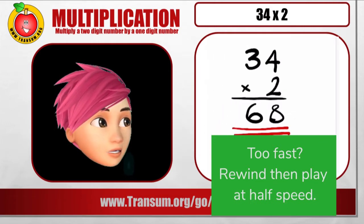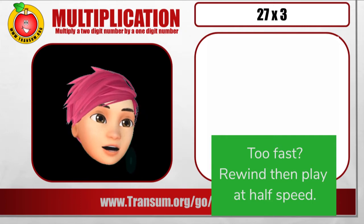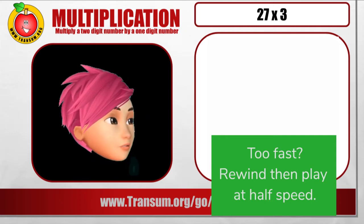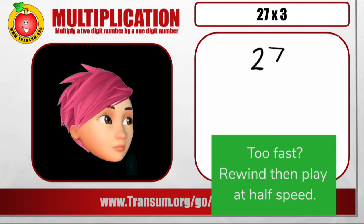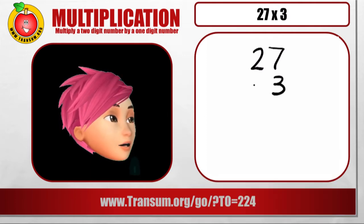Okay, let's look at another example here. 27 times 3. Right, well write it out again as you did before with the 27 at the top and the 3 underneath.